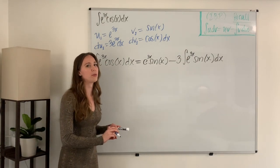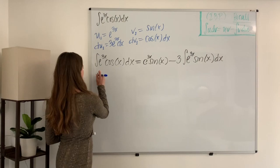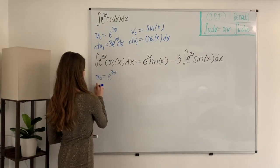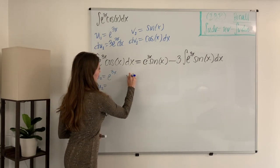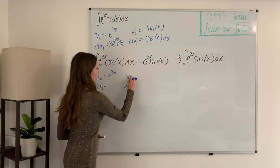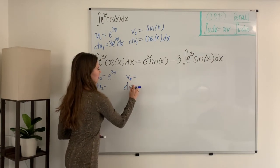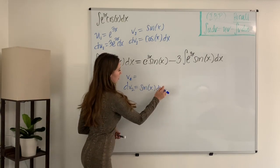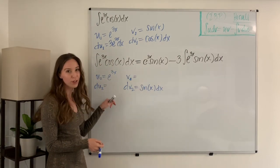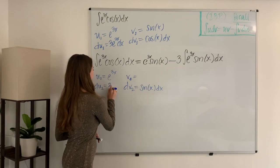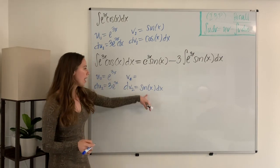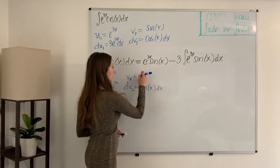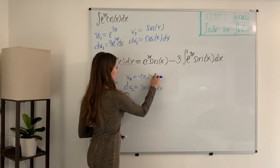So we're going to do integration by parts again. For the second integration by parts, my u₂ I'm going to pick e to the 3x again, and my dv₂ I'm going to pick sine of x dx. To find du₂, we take the derivative of u, and we get 3e to the 3x. To find v₂, we take the integral of sine of x dx, and for that we get negative cosine of x.